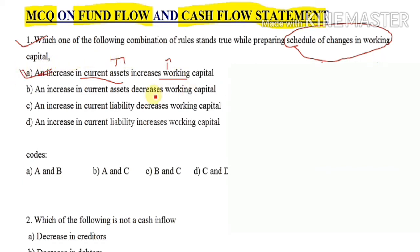The second option states: an increase in current assets decreases working capital. This option is incorrect, because when we put cash or funds into the business, current assets increase and so does working capital — they move in the same direction.